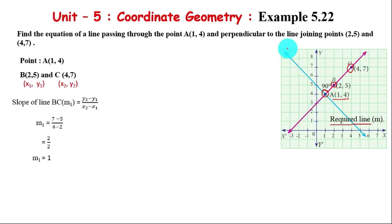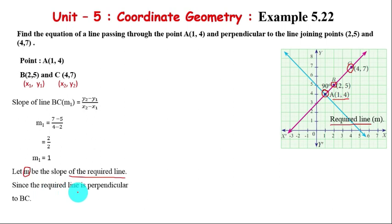Let m be the slope of the required line. Since the required line is perpendicular to BC, perpendicular lines satisfy the condition m1 times m equals -1. So m1 is 1, therefore m times 1 equals -1, giving m = -1.